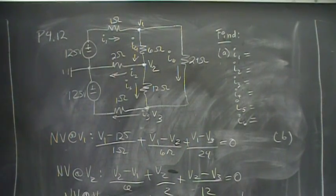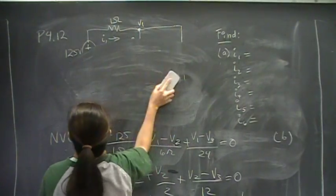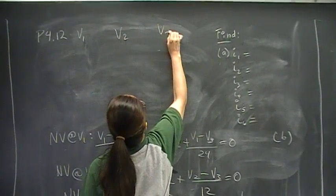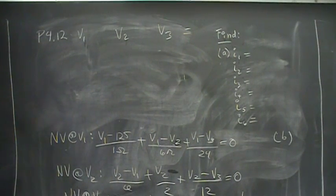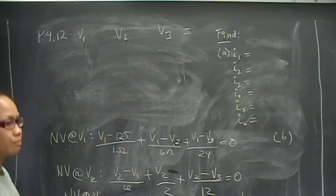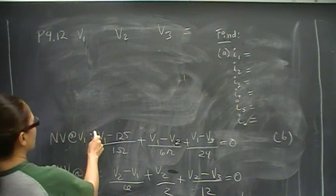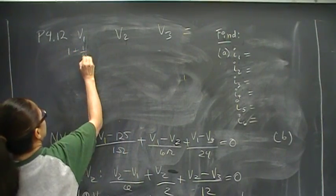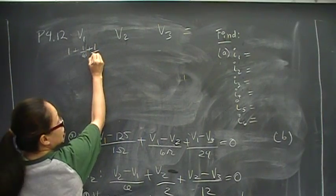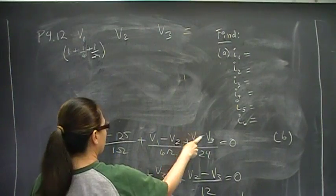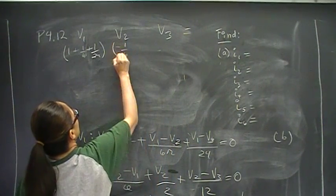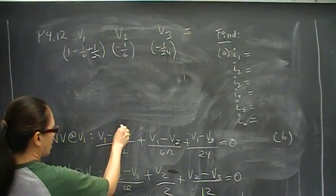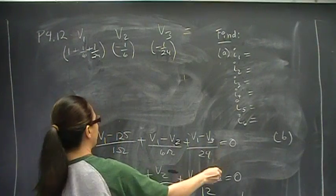So now I have my three equations. I'm going to rewrite them in matrix form. V1, V2, V3 equals. And I'm not going to do any simultaneous equations because that's what you have a calculator for. In the first equation, the coefficients of our V1 are 1, 1/6, 1/24. V2, I have negative 1/6. V3, I have negative 1/24. I have a constant here, which I'm going to bring over here. It would be a positive 125.